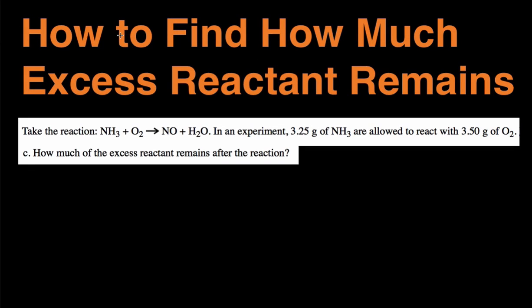Hey guys, this is Michael from Conquer Chemistry. In this video we're going to be talking about how to find how much of the excess reactant remains. We're going to do this by working through this example right here. This example says, take this following reaction: in this experiment 3.25 grams of NH3 are allowed to react with 3.5 grams O2. How much of the excess reactant remains after the reaction?